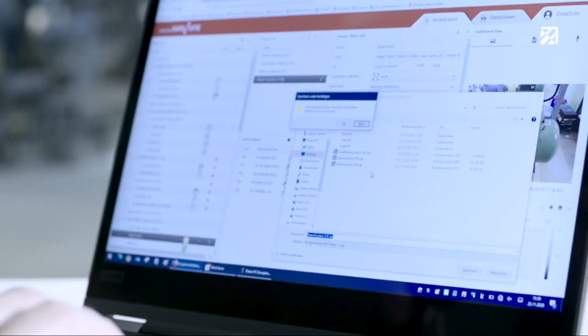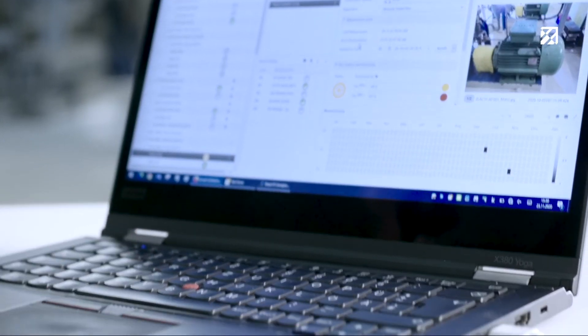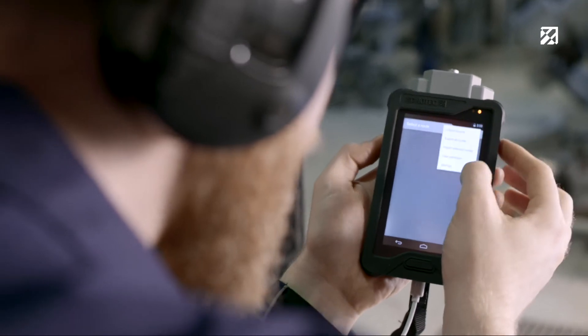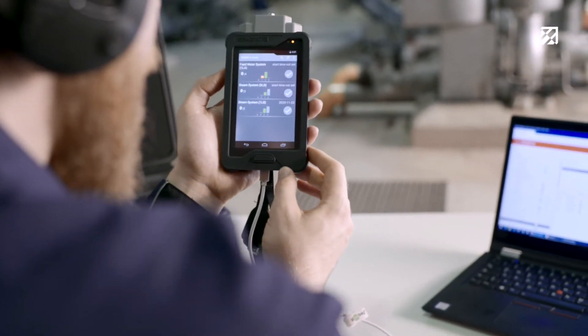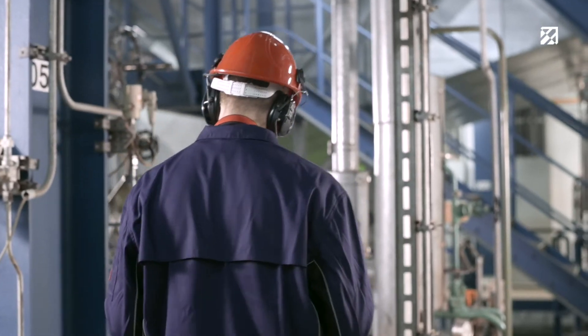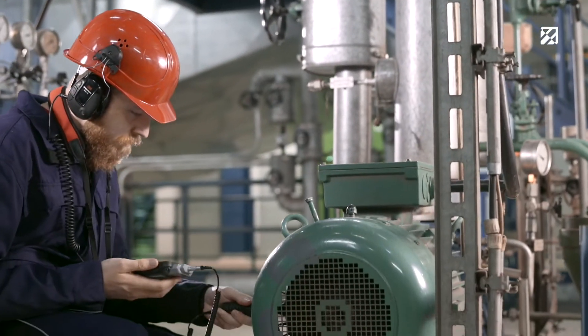With the help of the web app, a route can be created across all bearings in Hall One and the data transferred to the test device via the Asset Expert app. Let's go to the test. Open the Asset Expert app.